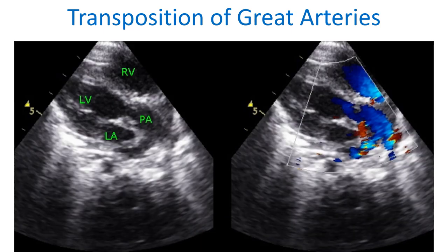An echocardiogram in the modified parasternal long axis view shows the vessel arising from the left ventricle bifurcating distally — it is the pulmonary artery from the left ventricle, confirming transposition of great arteries. The aorta will not bifurcate and will show arch vessels when traced distally. The aorta was seen arising from the right ventricle in this cyanosed infant in another view.